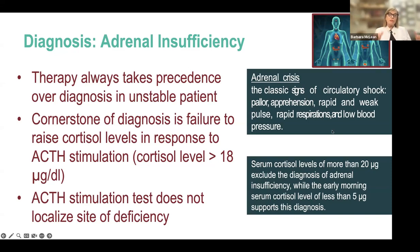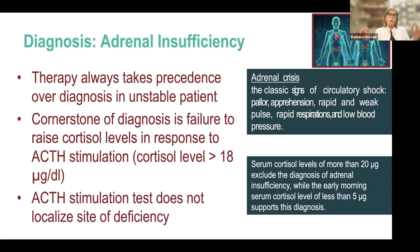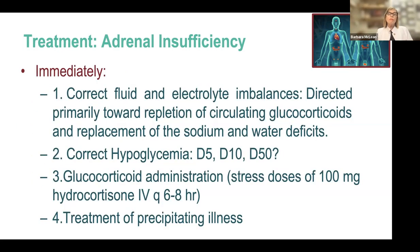Regarding spot cortisol: if the circulating level is more than 20, adrenal insufficiency is less probable. A morning cortisol level less than 5 supports adrenal insufficiency — so if providers want a spot cortisol, draw it at 4 a.m., not in the afternoon. Ultimately the diagnosis is made clinically. There are four things that must happen immediately — in no particular order — and the first is to correct fluid and electrolyte imbalances.